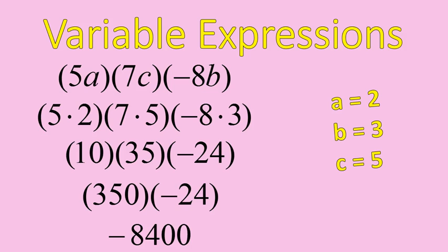And 350 times negative 24 gives me negative 8,400. That's how we solve this expression. Again, simplify everything inside of parentheses and then multiply when you have two sets of parentheses right against each other.